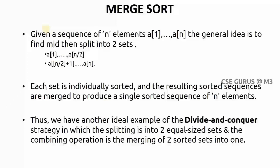Given a sequence of n elements, from a[1] to a[n], the general idea is to find the mid — the middle — and then split the array into two sets. We need to find what this mid value is and how to split into those two sets.